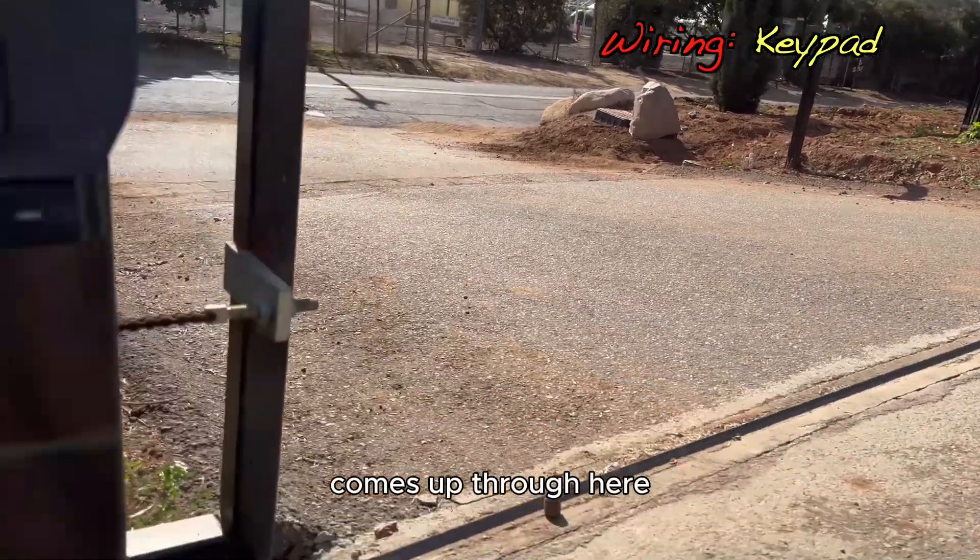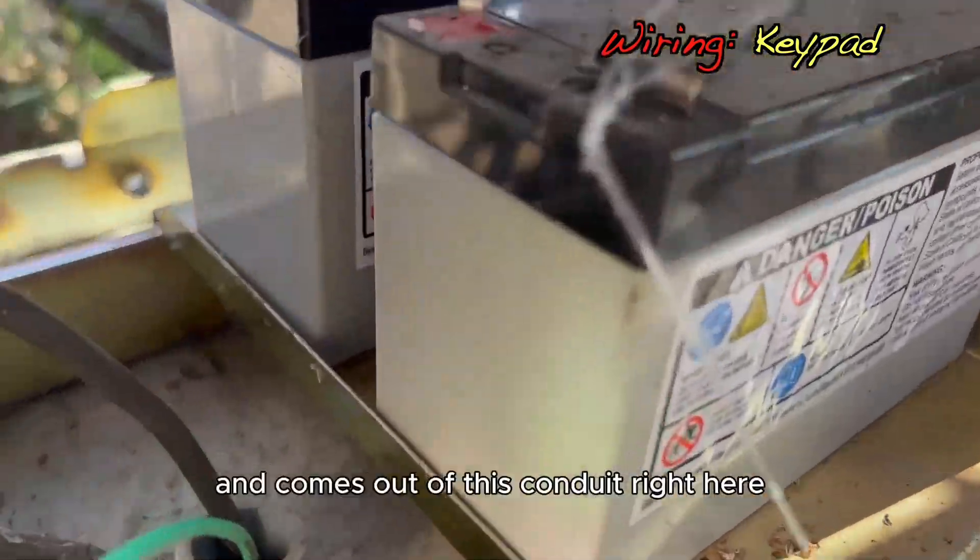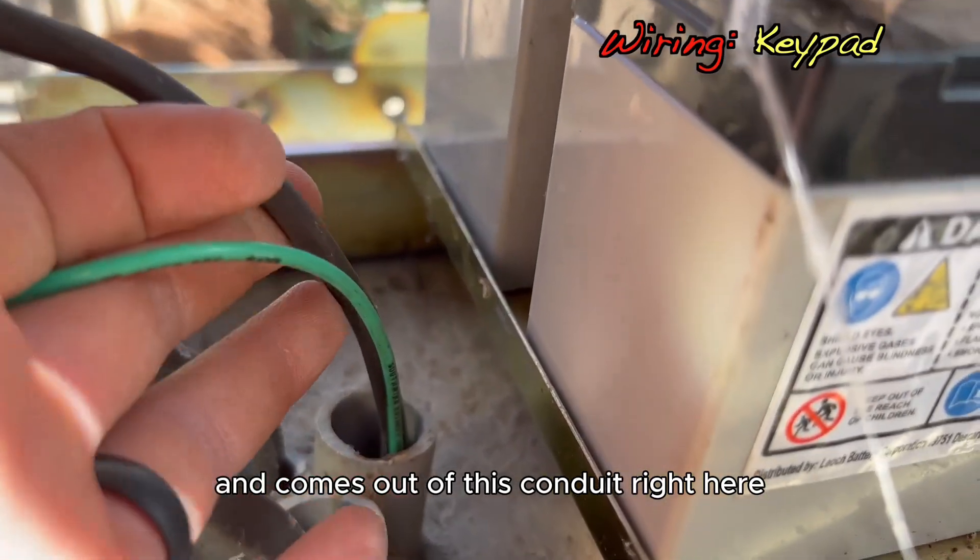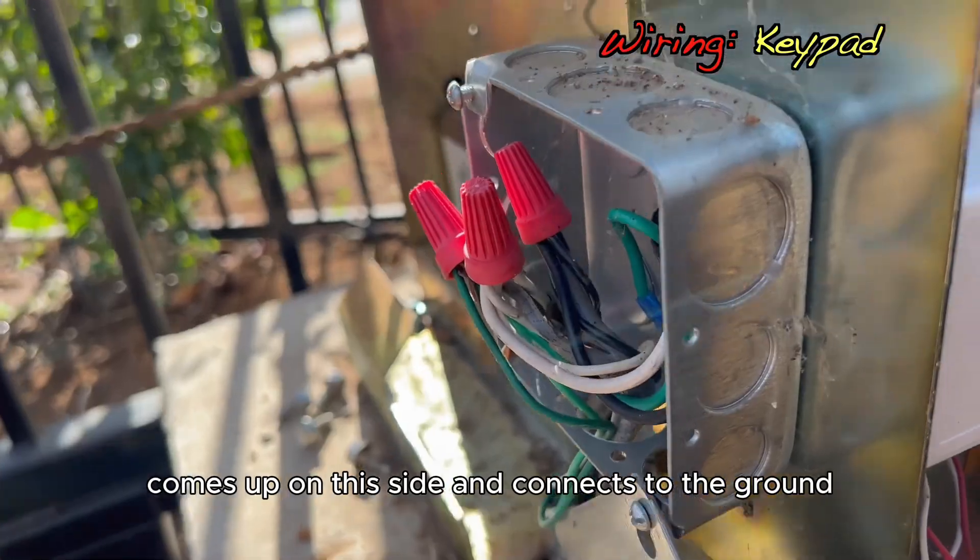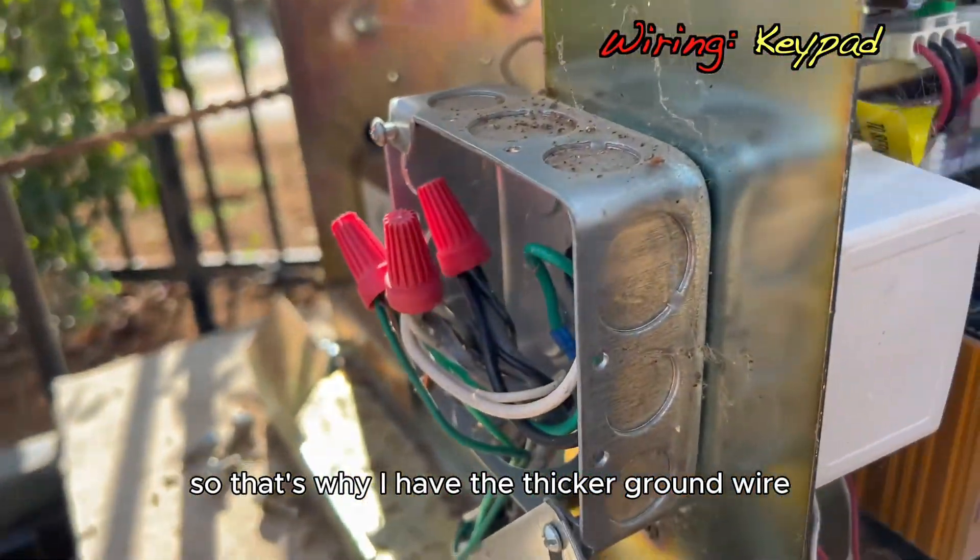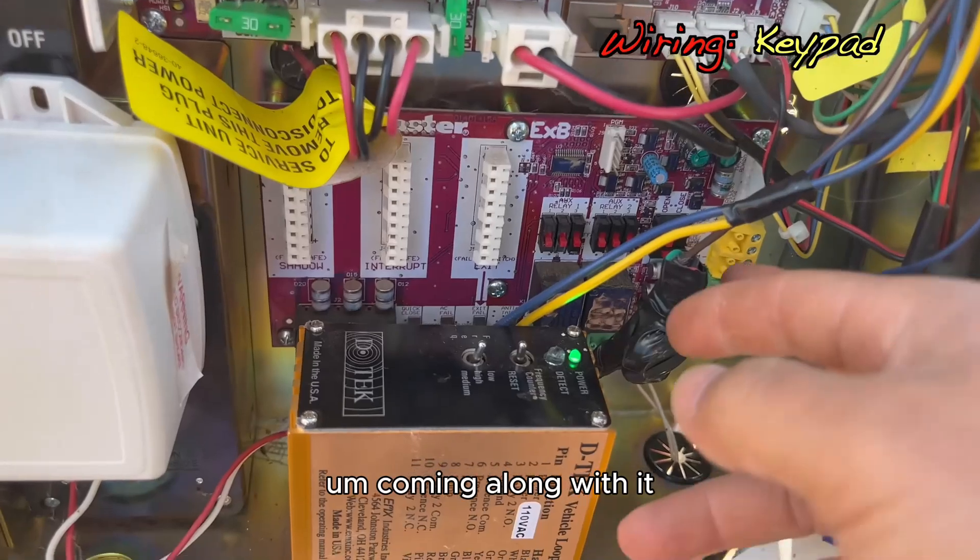That runs through conduit, comes up through here and comes out of this conduit right here. Now the ground wire comes up on this side and connects to the ground, so that's why I have the thicker ground wire coming along with it.